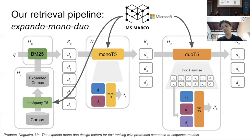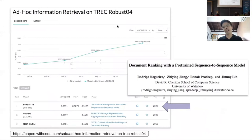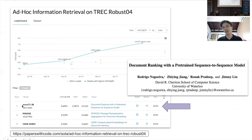We only rely on MS MARCO data, and we call these models 'hammers' because we don't modify the architecture — these are the only tools we have, so we see everything as a nail. Looking at Robust04, a popular IR benchmark, simply using MonoT5 at three billion parameters in zero-shot training on MS MARCO performs really well — competitive with the PARADE model, though PARADE is much smaller and was trained on some Robust04 data.